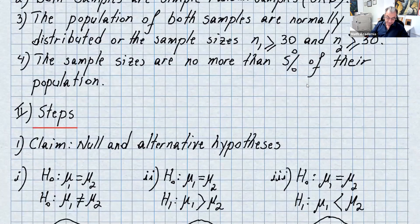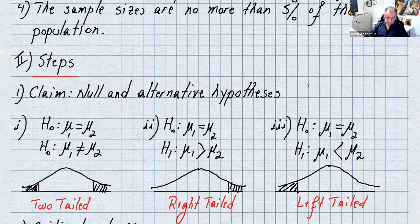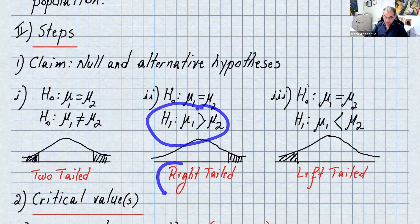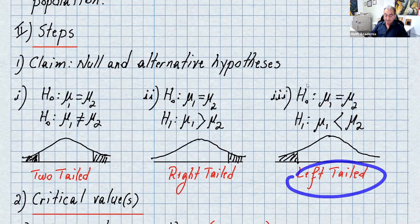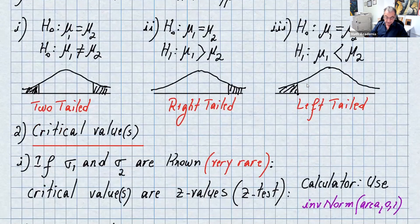Steps, just like before: you have to write the claim, the null hypothesis, and the alternative hypothesis. We can have three cases: mu1 is not equal to mu2, which is a two-tail test; mu1 is greater than mu2, which is a right-tail test; and mu1 is less than mu2, which is a left-tail test. Always for H0 we put mu1 equals mu2.